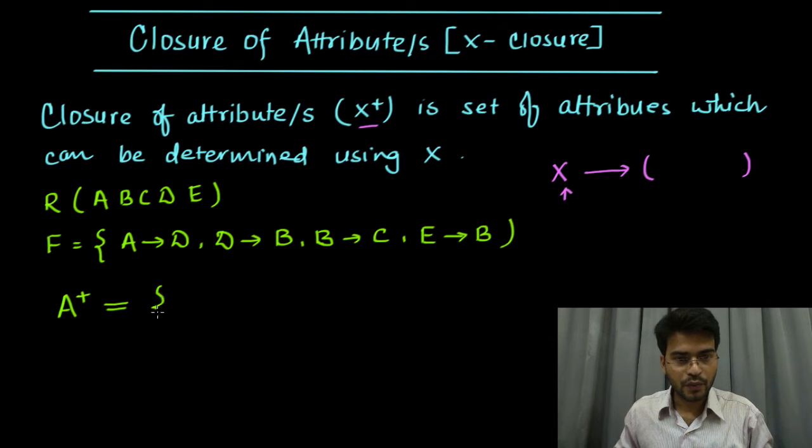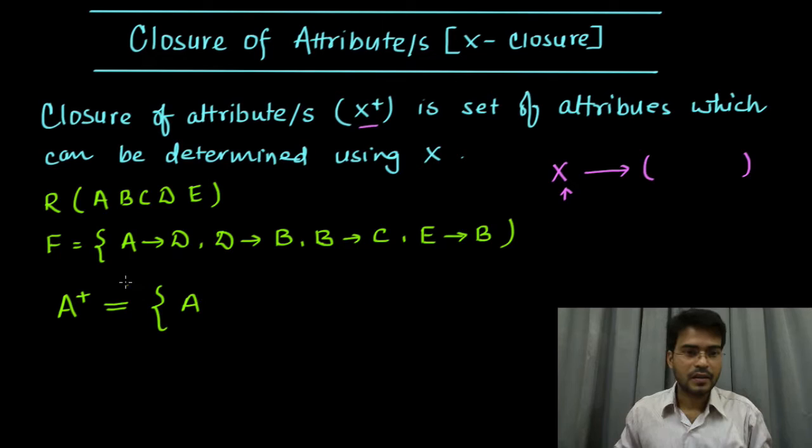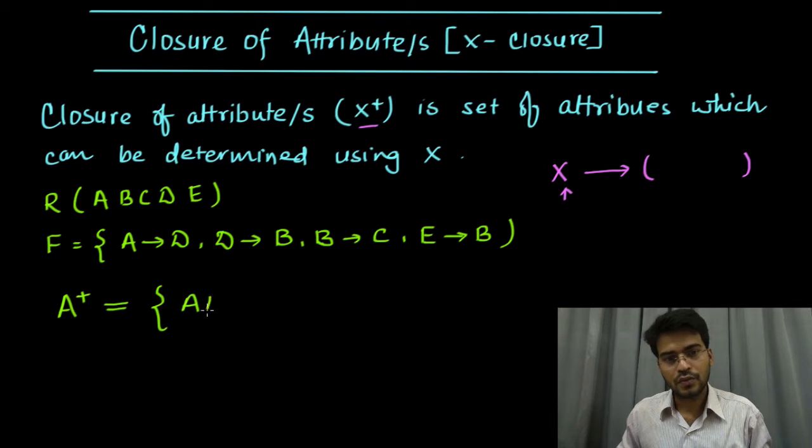Here we have to find out what are the attributes which can be determined with A. A of course can determine itself, so it will be A. Then from the first functional dependency, we know that A can determine D, so we will write here D.